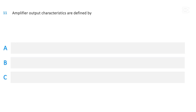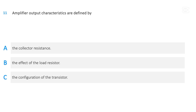Amplifier output characteristics are defined by: the collector resistance, the effect of the load resistor, or the configuration of the transistor. The correct answer is: the configuration of the transistor.